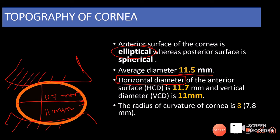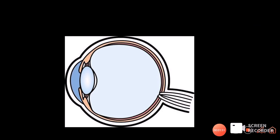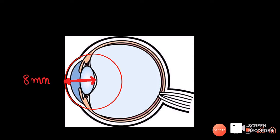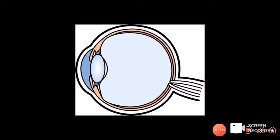The radius of curvature of the cornea is about 8 mm (or 7.8 mm as referred to in certain books). If you draw a circle around the cornea, the radius of that circle is about 8 mm — and that is the radius of curvature of the cornea. Similarly, the radius of curvature of the sclera, derived from its corresponding circle, is about 12 mm.